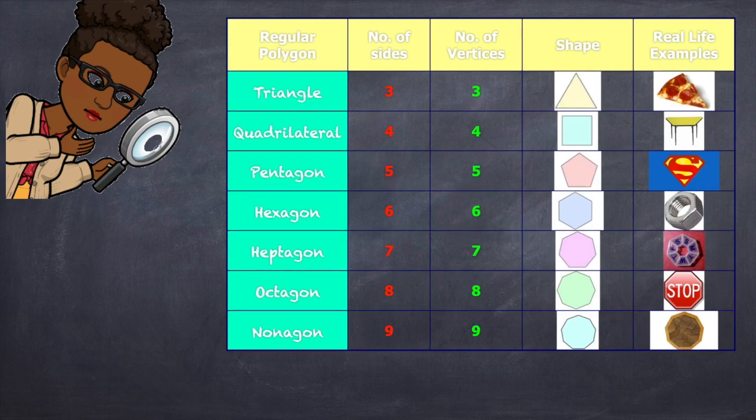Nonagon. The word nona means nine. Therefore, it has nine sides and nine vertices. We've seen that before. That's an example of a coaster. That's something we use to put our cups on so that our furniture does not get water damage.